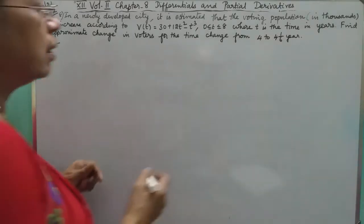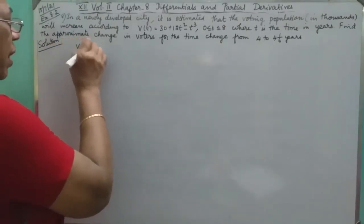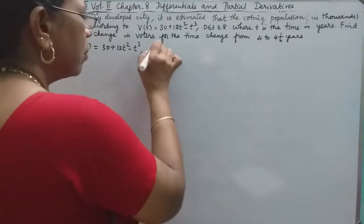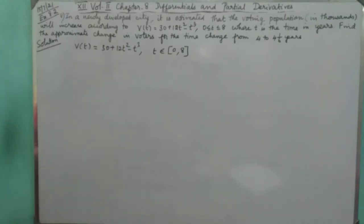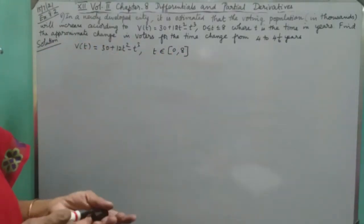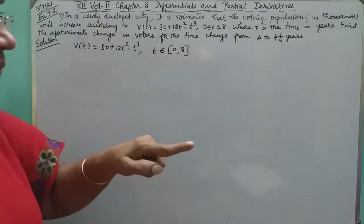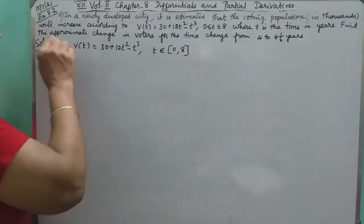The voting population is a function. The function is V(t) = 30 + 12t² - t³, where t belongs to the closed interval [0, 8]. It is a polynomial, so it is differentiable. We need to find the approximate change in voters for the time change from 4 to 4 and 1/6 years. When we have 4 years population versus 4 and 1/6 years population, we need to find the approximate change.